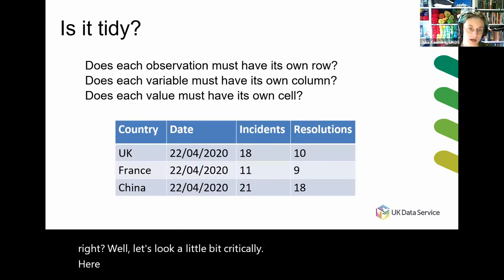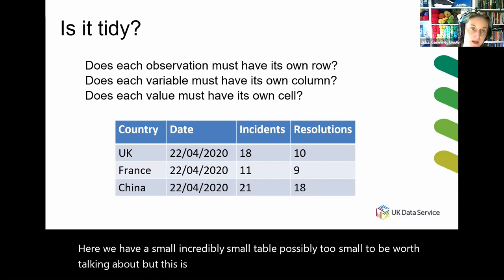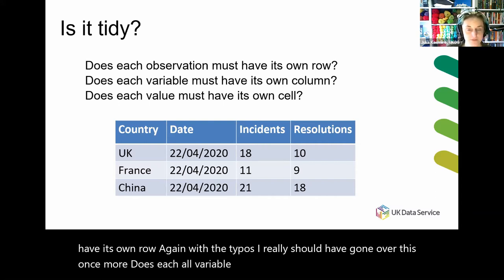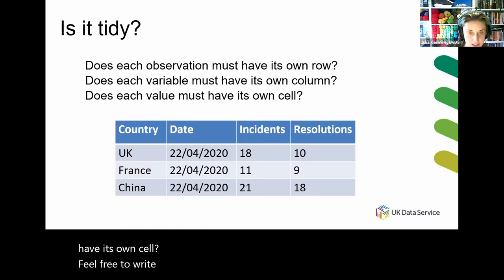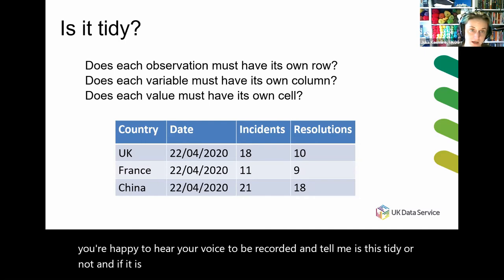Each observation has its own row. Each variable has its own column. And each value has its own cell. That might seem obvious — surely all data should be tidy, right? Well, let's look a little bit critically. Here we have a small, illustrative example table. Does each observation have its own row? Does each variable have its own column? And does each value have its own cell? Feel free to write in the chat or turn on your microphone and tell me: is this tidy or not? And if it is not, which of these features of tidy data does it not meet?